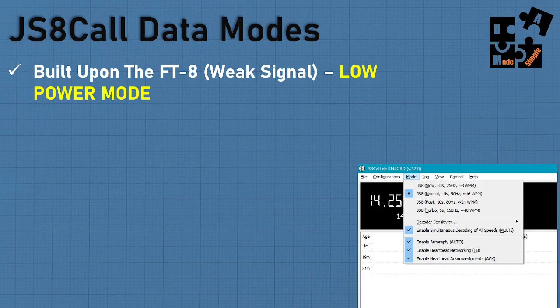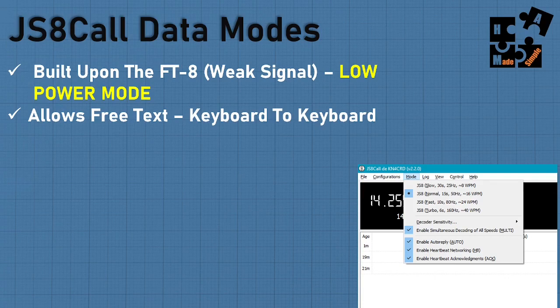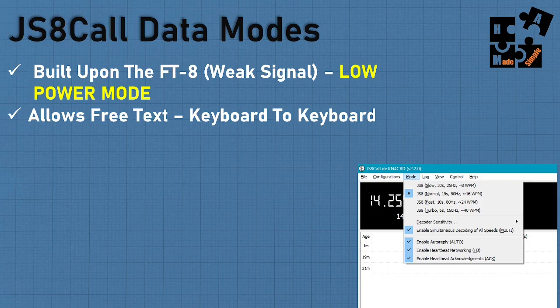JS8Call was built upon the FT4 and FT8 platform, which is very weak signal propagation that requires a time sync but runs on low power. Major organizations in the ham radio and prepping community, such as Amron, use JS8Call. It essentially allows you to do free texting — where FT8 was basically five commands (signal report, grid location, call sign, etc.), JS8Call on that same weak-signal platform incorporates full keyboard-to-keyboard texting. I can do free text, keyboard to keyboard, right off it.